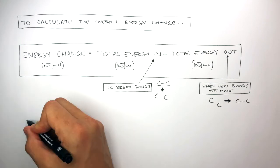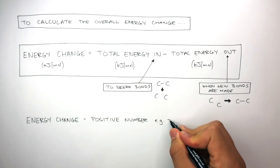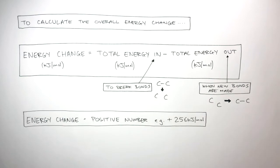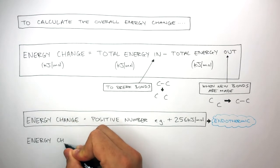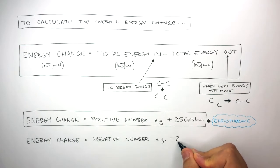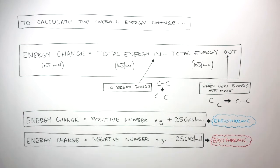If your energy change is a positive number — for example, plus 256 kilojoules per mole — then this is an endothermic change. A positive number is always an endothermic change. If the energy change is a negative number — for example, minus 256 kilojoules per mole — then this is an exothermic change. A negative number is always an exothermic change.